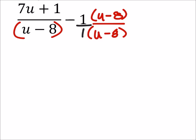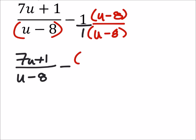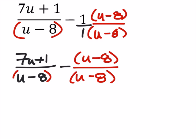This gives us a new expression. We've got 7u plus 1 over u minus 8, and this is minus now u minus 8 over u minus 8. So see how we have these two common denominators now, so then we can combine this numerator stuff.